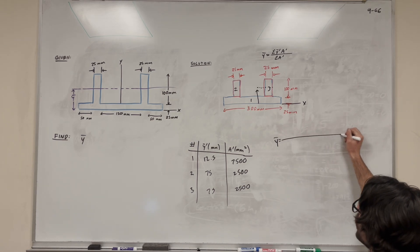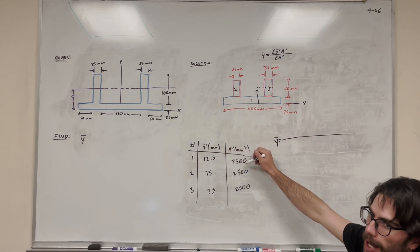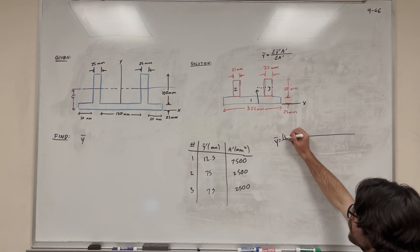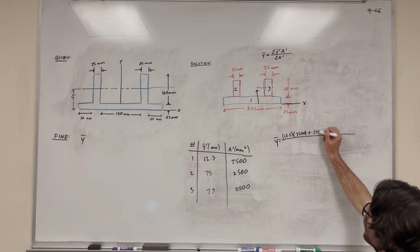So we're going to do that, so here we have our equation y bar. We're going to take the y bar prime multiplied by area prime for each of these and add it up. So we have 12.5 times 7,500. We're going to then add that to 75 multiplied by 2,500.